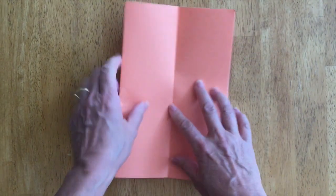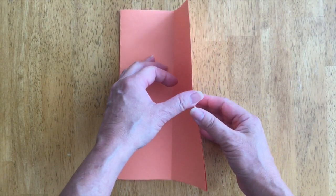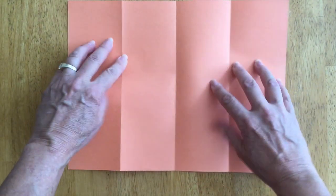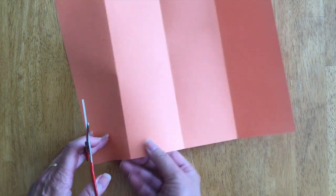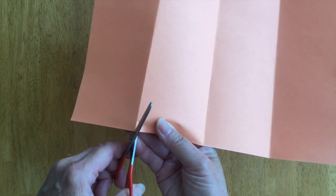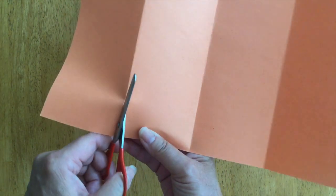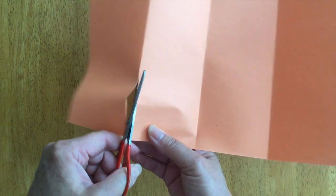Then what you're going to do is open it up and cut with your scissors along the line like so until you get four strips of paper.